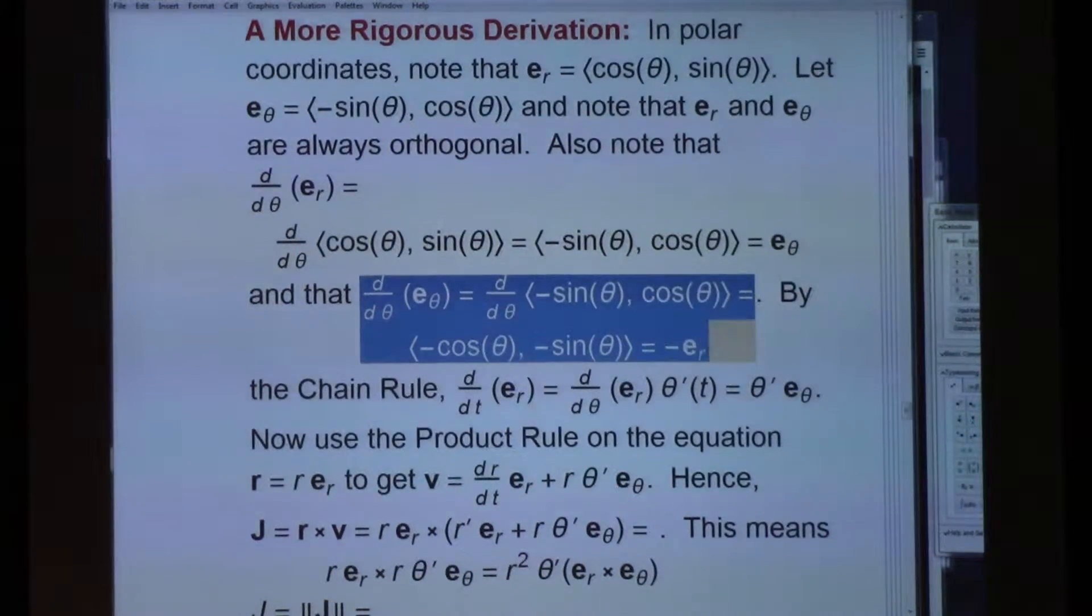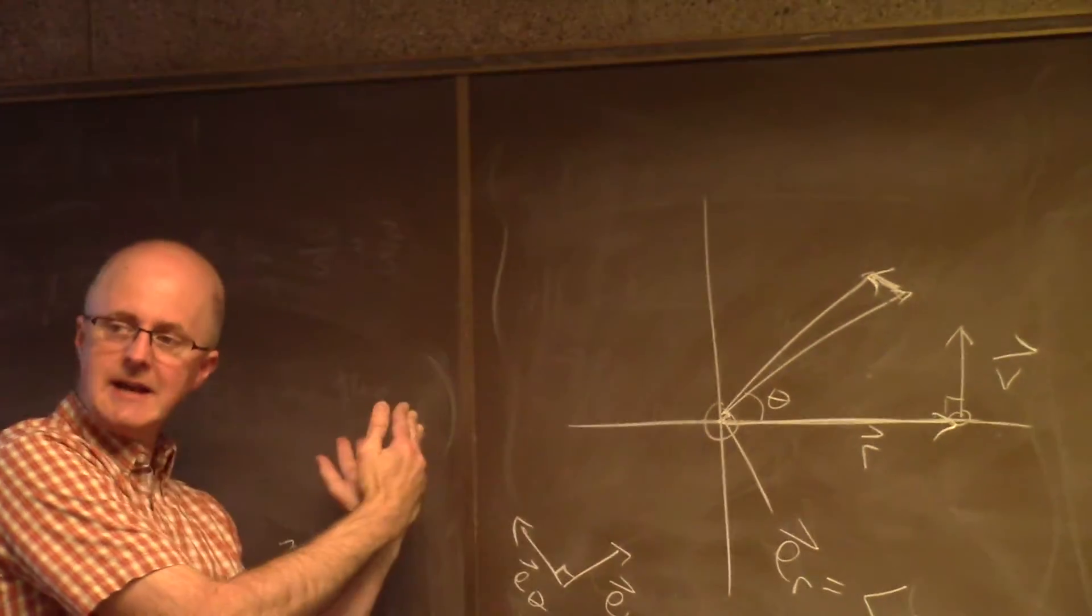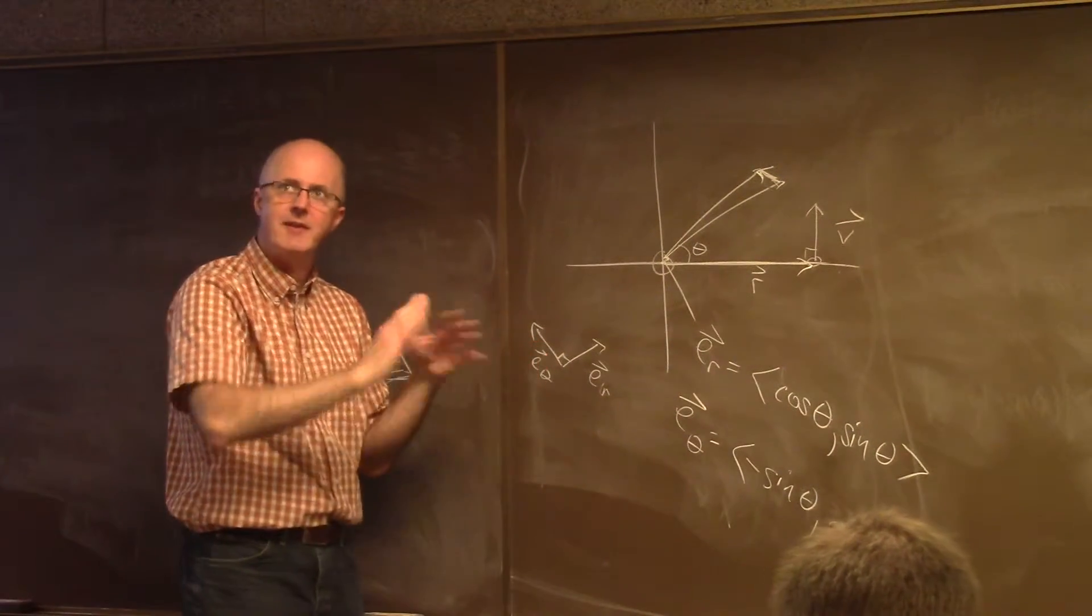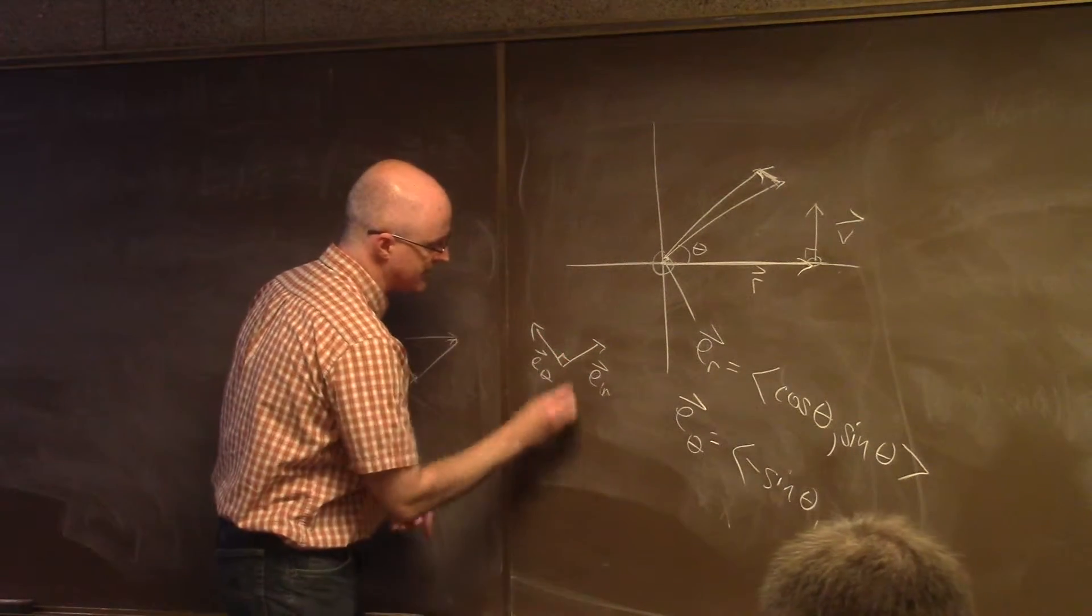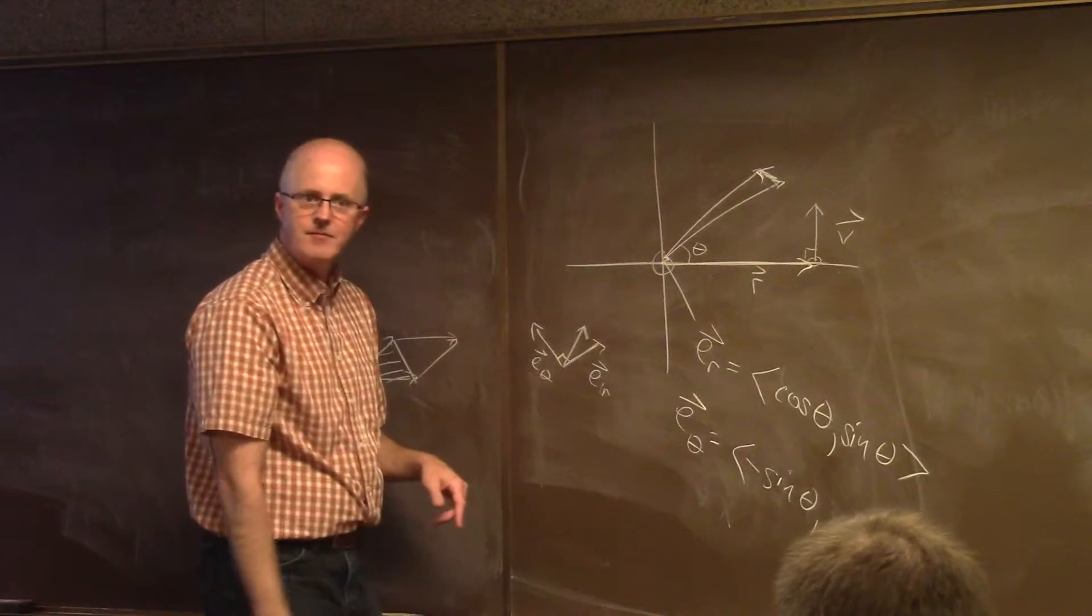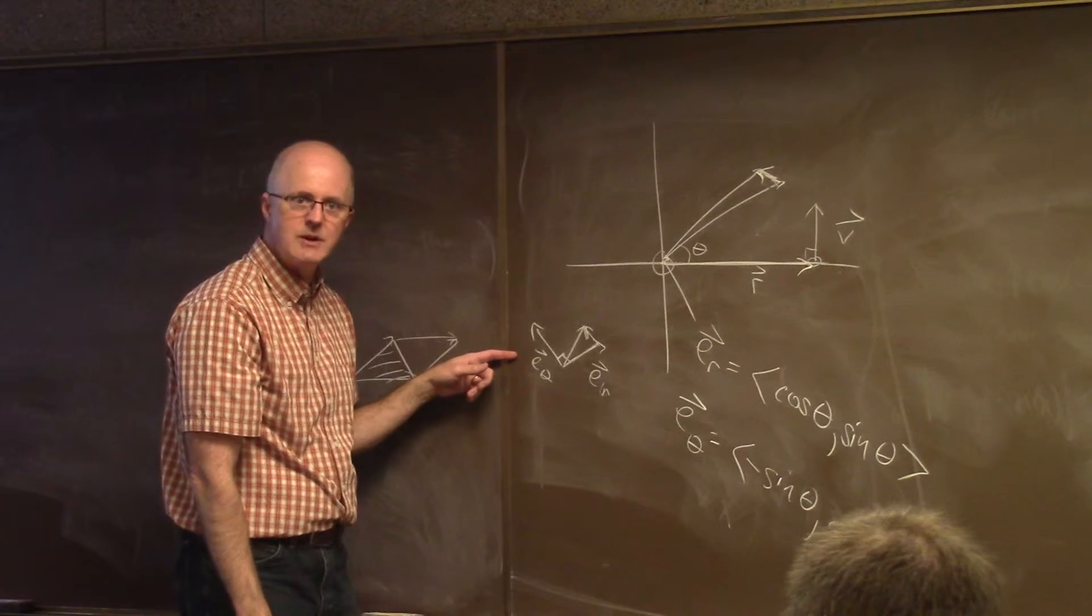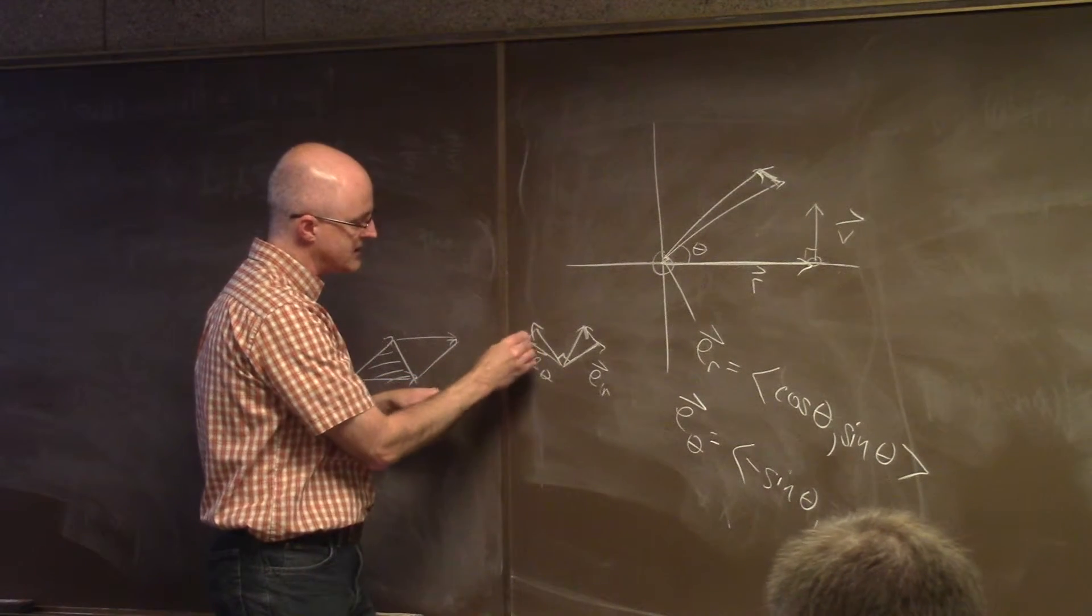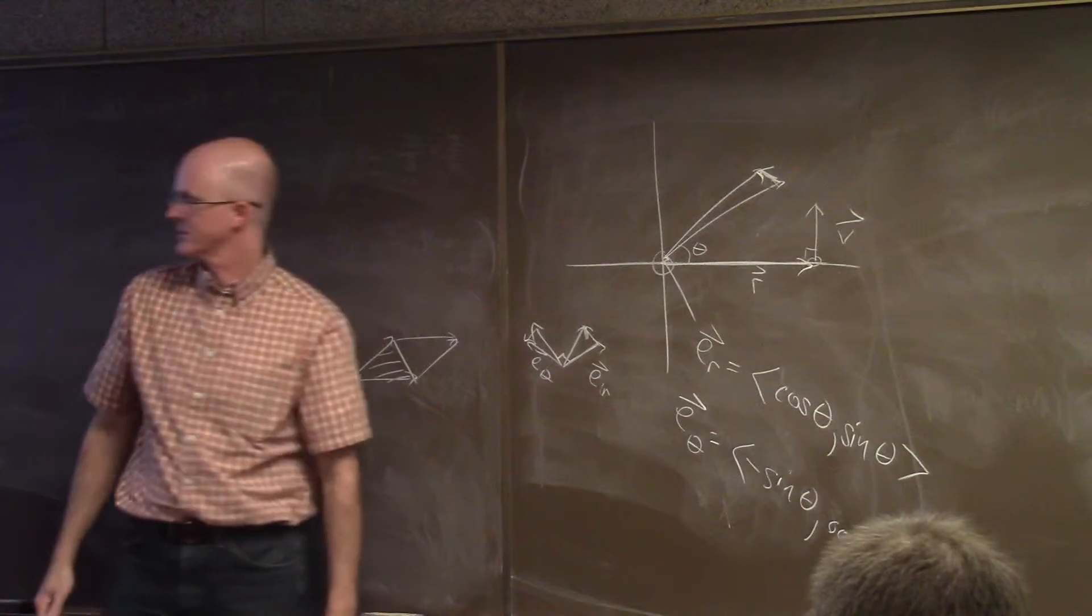Likewise, the derivative of E theta is related to ER. It's negative ER. It should make some intuitive sense if the planet really is going counterclockwise so that these vectors are rotating counterclockwise. A small increase in theta makes ER change from being in this direction to being more like this, which is sort of in the direction almost parallel to E theta. And E theta changes from this to about like that, which is sort of in the direction opposite of ER. So that's a little picture that can make some intuitive sense out of those derivative facts.